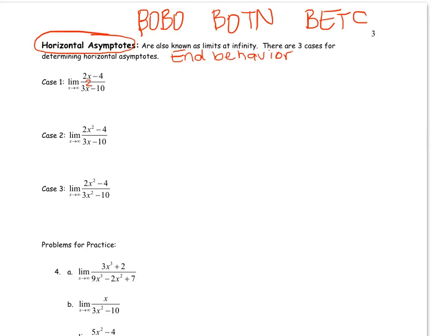So first of all, there's a little typo. That should be a 3x squared on the denominator of case one. So you want to look at the degrees. The degree of the numerator is one. The degree of the denominator is two. So since the degree of the denominator is bigger, this has a horizontal asymptote of y equals zero by rule. I think it was low over high, zero equals y. But this is also Bobo. Bigger on bottom, zero. That's what Bobo stands for.